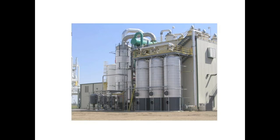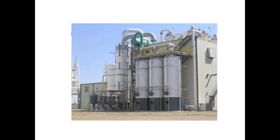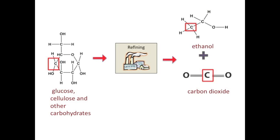In a traditional ethanol refinery, the biomass passes through many complex steps. This slide demonstrates the reorganization of the carbon atoms and carbohydrate molecules into ethanol and carbon dioxide. Most of today's refineries use yeast or E. coli to ferment the plant sugars, such as glucose, into ethanol. At this point, the carbon in the carbon dioxide molecules is released as waste, and the carbon in the ethanol molecules is kept for later use.